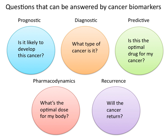Known biomarkers used in patient care include AFP, BCR-ABL for chronic myeloid leukemia, BRCA1 and BRCA2 for breast and ovarian cancer, BRAFV600E for melanoma and colorectal cancer, CA125 for ovarian cancer, CA19.9 for pancreatic cancer, CEA for colorectal cancer, EGFR for non-small-cell lung carcinoma, HER2 for breast cancer, KIT for gastrointestinal stromal tumor, PSA (prostate-specific antigen) for prostate cancer, S100 for melanoma, and many others.